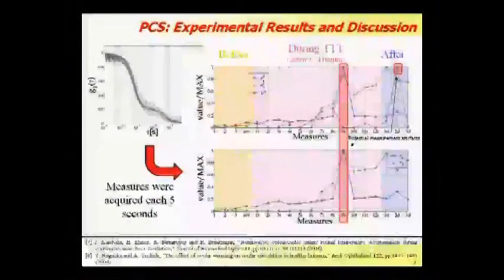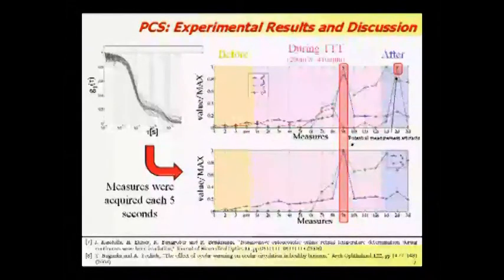As stated before, from the value of V-square, it's possible to retrieve information about the flow dynamics, whereas from delta and tau, it's possible to retrieve information about the temperature. The reported data are relative to a low-power TTT treatment. Moreover, before and after the treatment, we acquired three measurements.